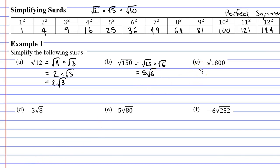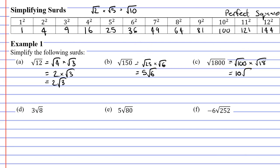Moving on to question C — we've got the number 1,800. Which perfect square divides evenly into 1,800? 100 will, because 100 times 18 gives 1,800. The square root of 100 is 10, so we get 10 times the square root of 18.